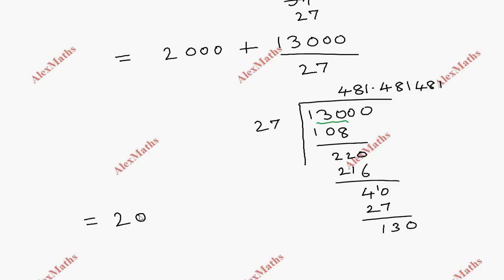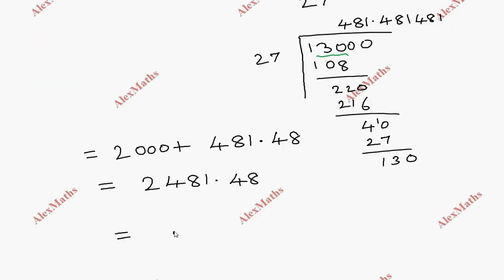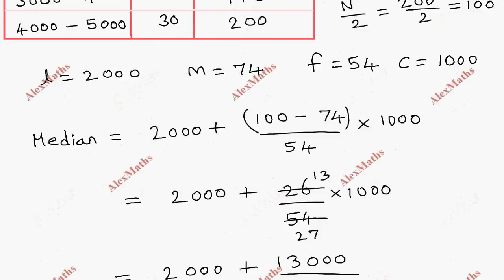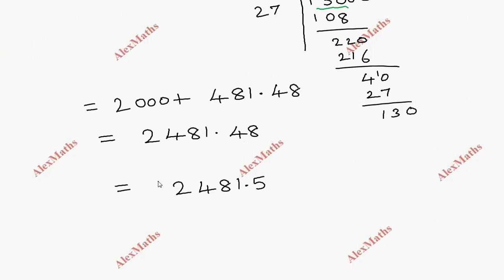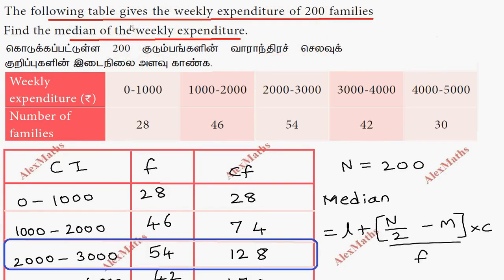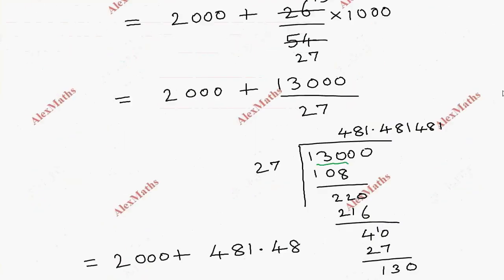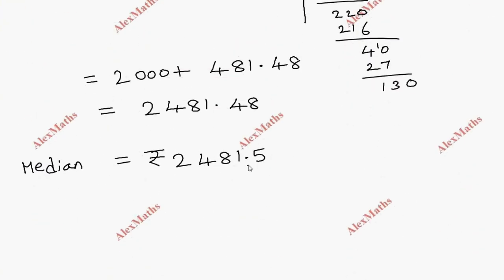We have to get round off to 2,000 plus 481.48. So we have to add to get 2,481.48. This is 2,481.5 rounded. So the median of the weekly expenditure is rupees 2481.5.